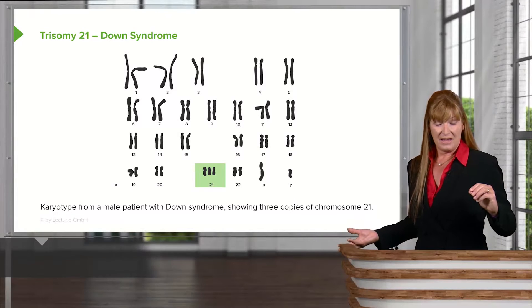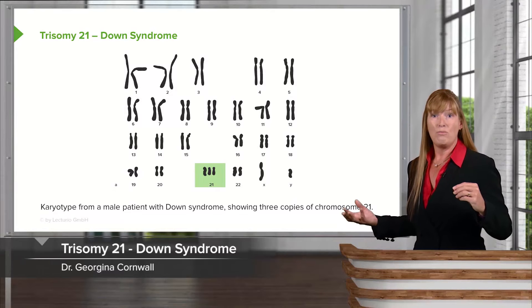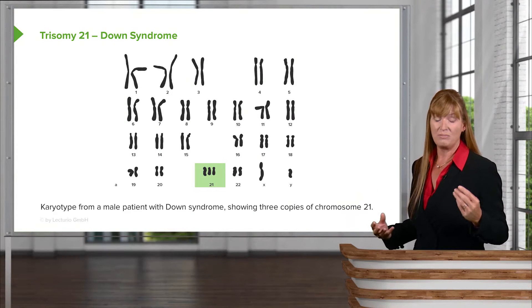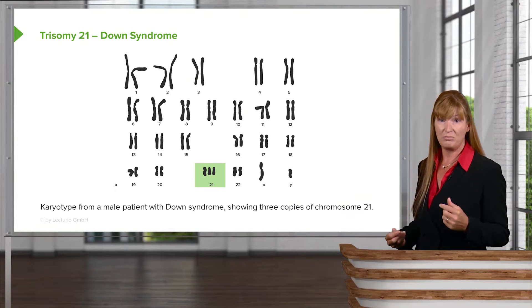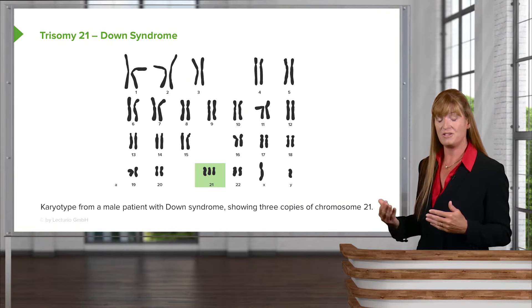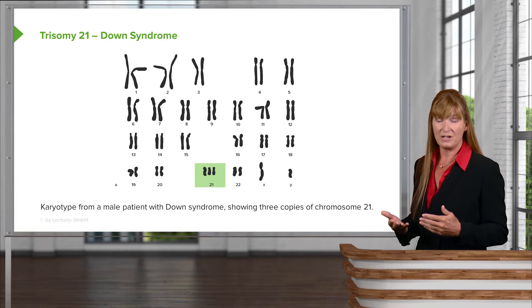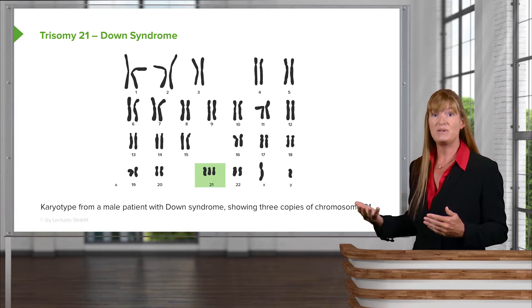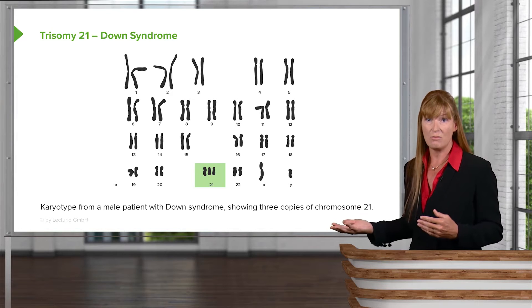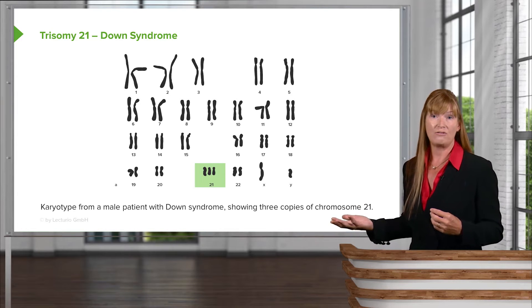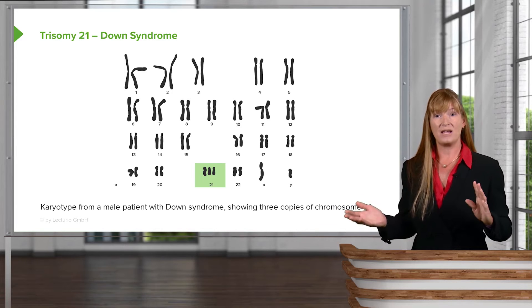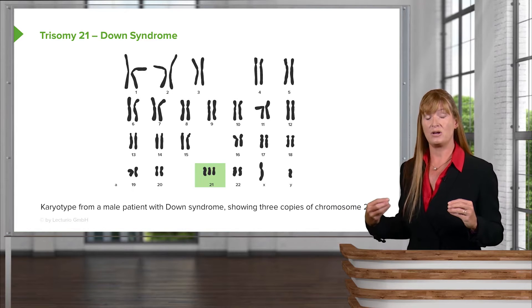Only three chromosomal polyploidies actually persist until birth. The first is Down syndrome. There's also Edwards syndrome, which is trisomy of 18, and Patau syndrome, which is trisomy of chromosome 13.